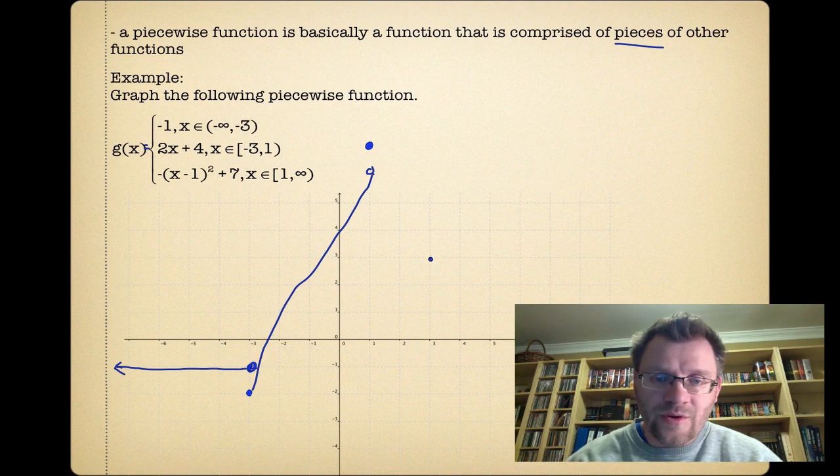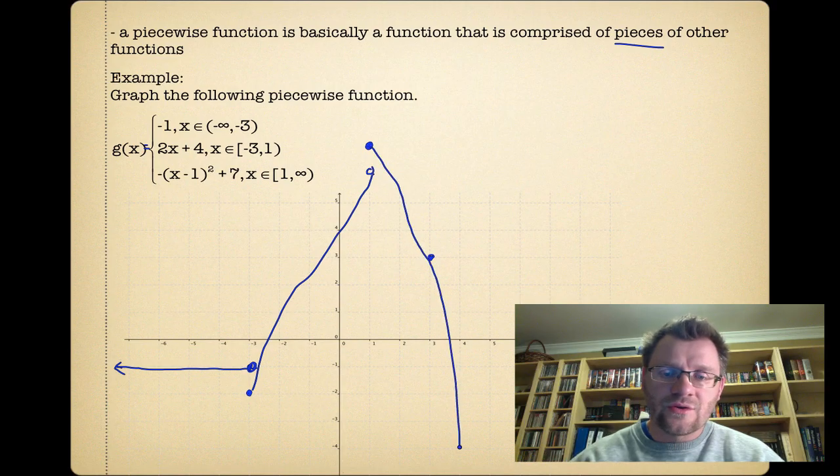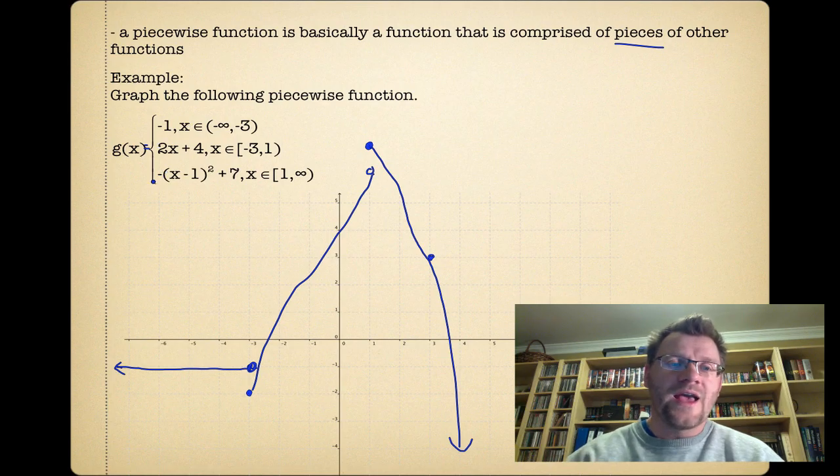So three comma three is another point on this parabola. And we know it's opening downwards. So we can just continue to sketch it. Something like that. So it's a piecewise function because there's three different pieces to it. And here's your domain for each of the pieces.